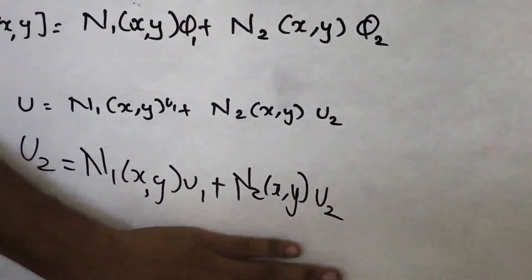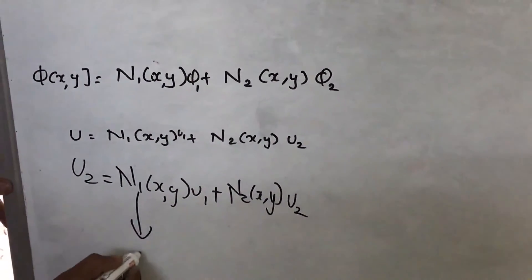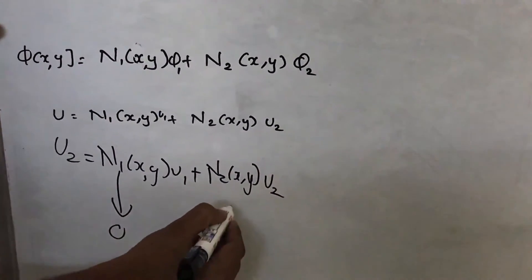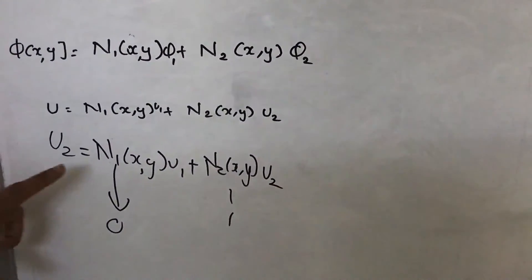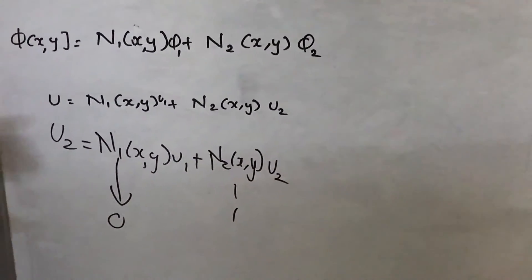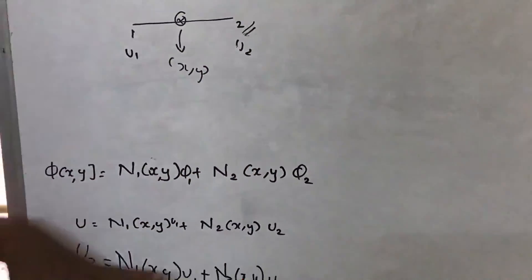we are concluding that for this to happen, this N1(x,y) must be 0 and this N2(x,y) must be 1. So if N1(x,y) is 0 and N2(x,y) is 1, we can find this displacement at u2 by this equation.